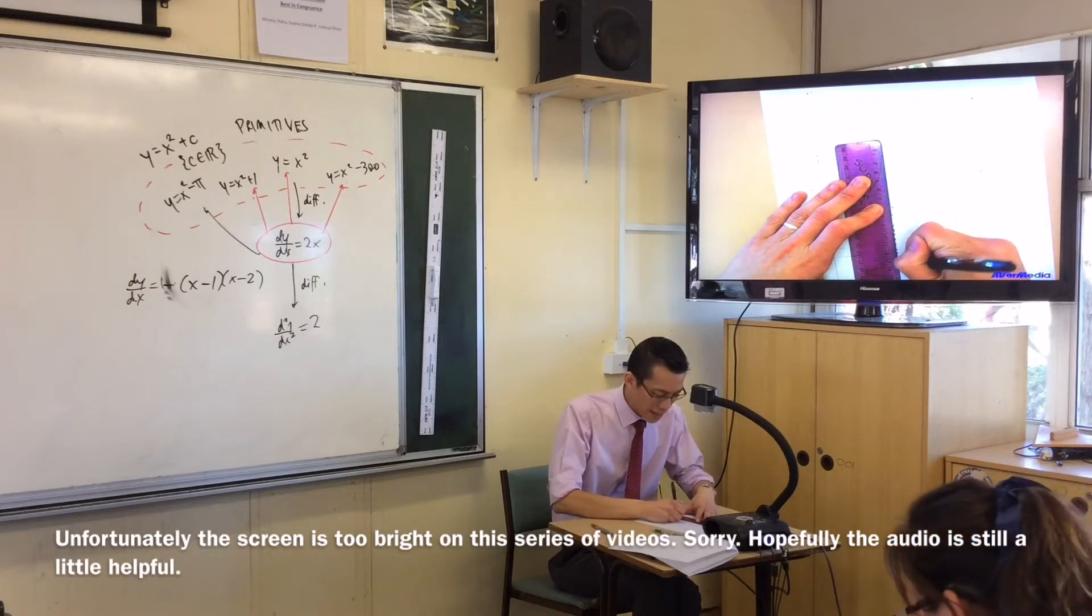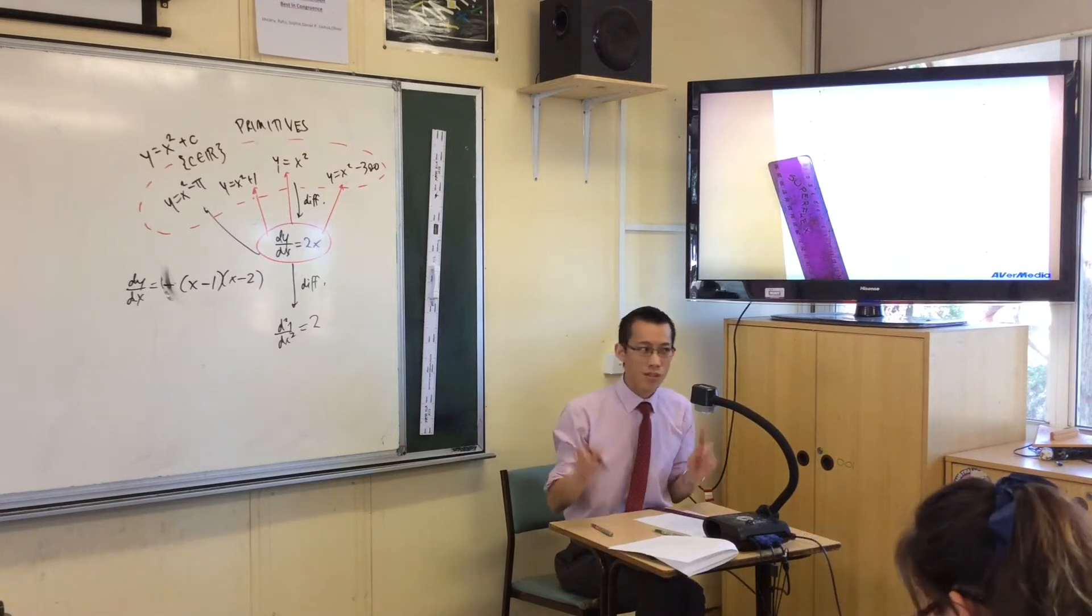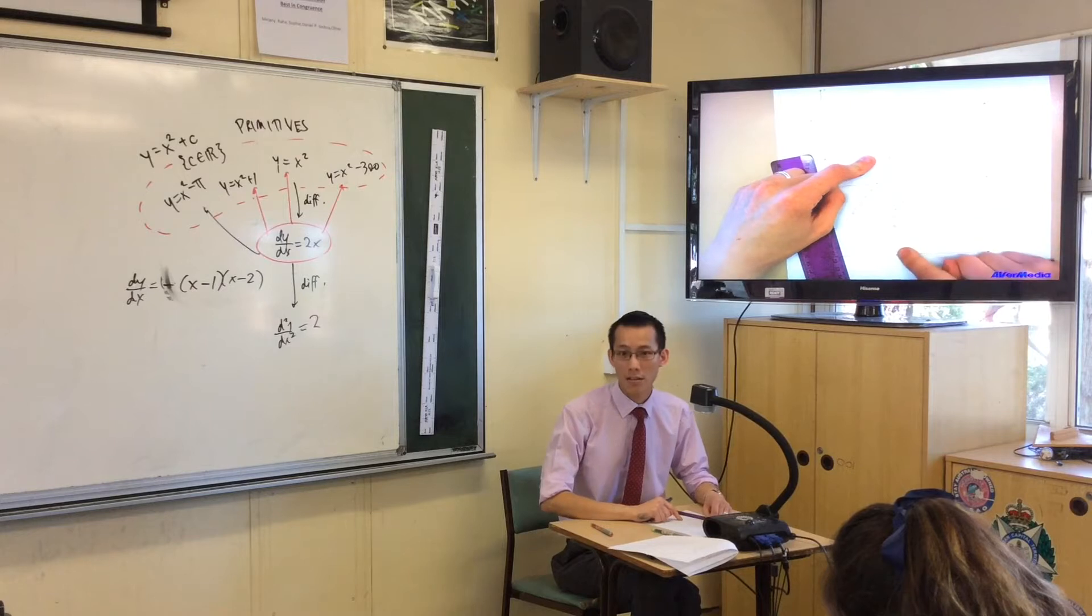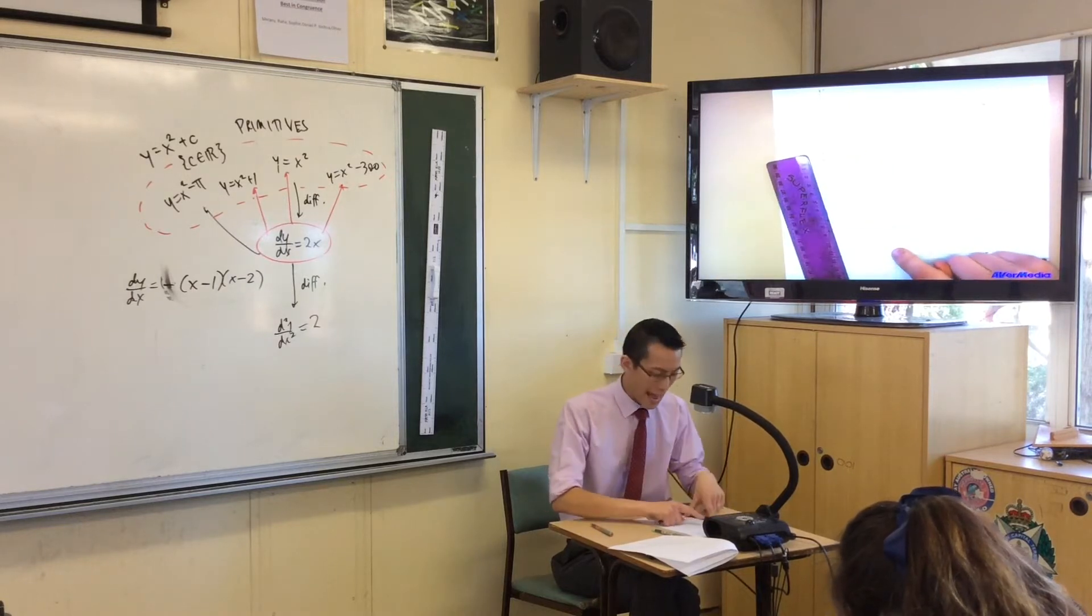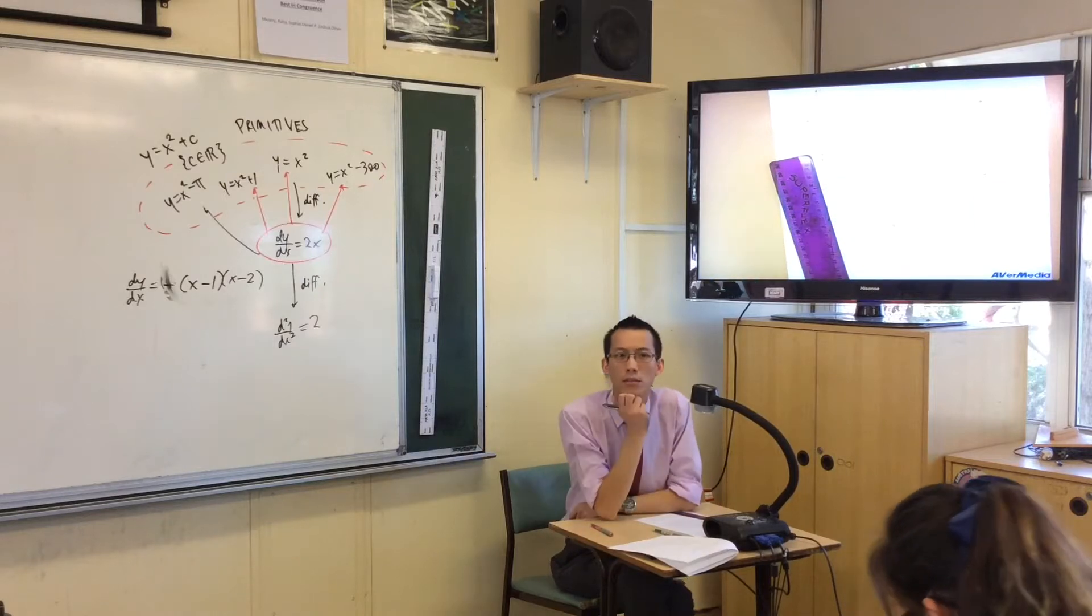Now I just made a conceptual leap and I wonder if you can work out how I made it. I knew somehow that not only was there a discontinuity here and here, but in fact, an asymptote here will give me an asymptote here. How do I know?